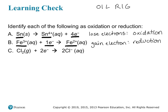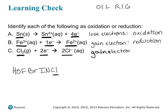In problem C, we have neutral chlorine — which is a diatomic molecule, so it's always found as a pair with itself when neutral. That chlorine molecule gains two electrons, and in the products we have two chloride ions. A gain of electrons is reduction, so this reaction is reduction.